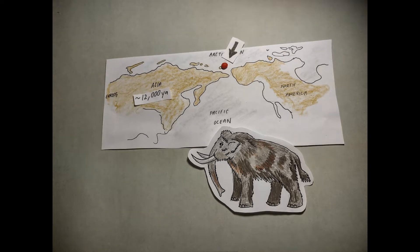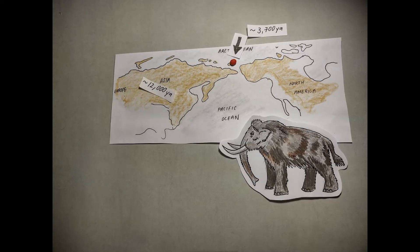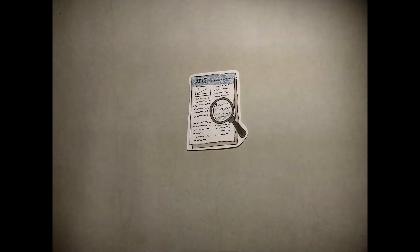The last surviving population lived in Wrangell Island on the Arctic Ocean and went extinct approximately 3,700 years ago. This population has been the focus of some groundbreaking genetic research.